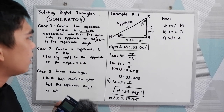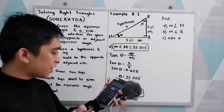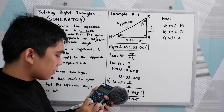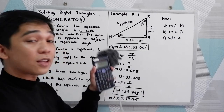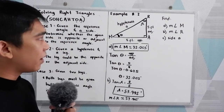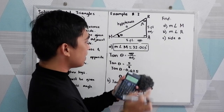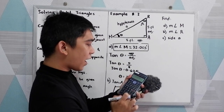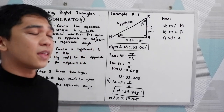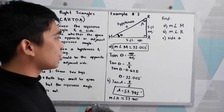To check: the sum must be 180. We have 90 plus angle M (32.005) plus angle R (57.995) equals 180. Another method: if you want to get the measure of angle R, just use the triangle angle sum theorem — 180 minus 90 minus 32.005 gives the same answer: 57.995 degrees. You can use any technique to get the unknown angle, and you should arrive at the same answer.